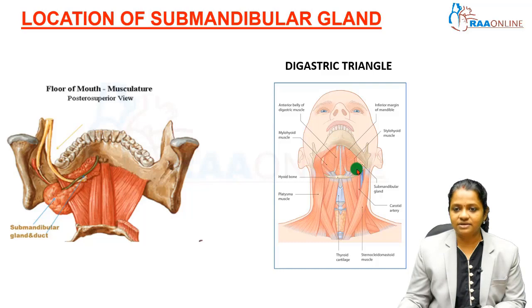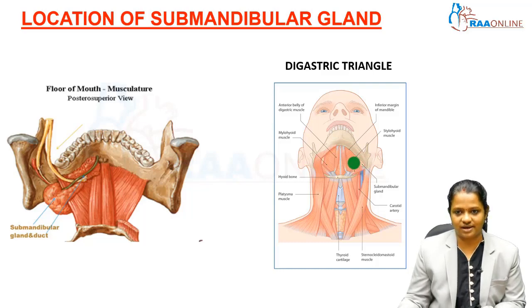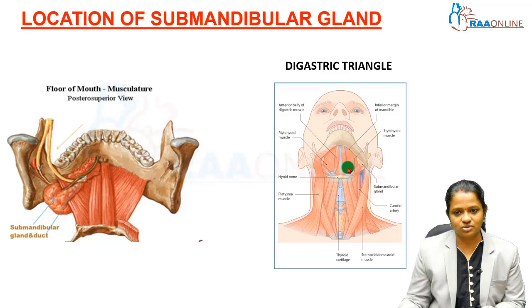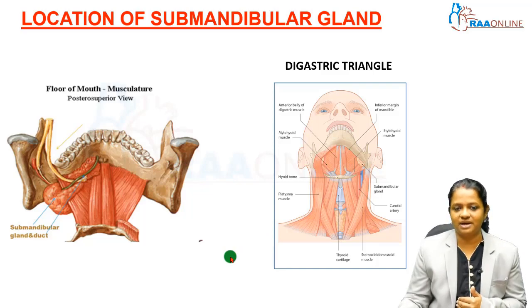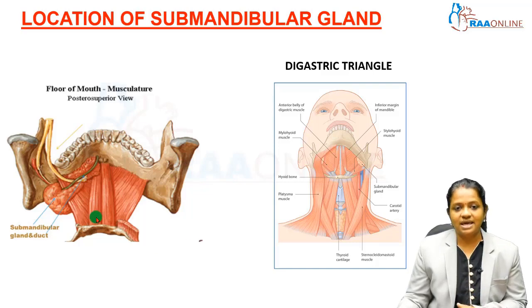Part of the gland is seen in the digastric triangle, which is also called the submandibular triangle, since the submandibular gland is its main content. In summary, the submandibular gland is located partly behind and partly below the body of the mandible in the submandibular region. A part of it also extends deep to the myelohyoid muscle.